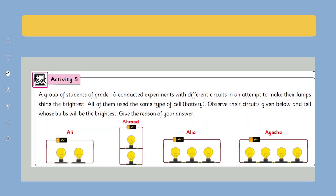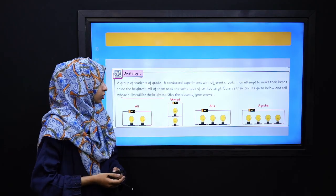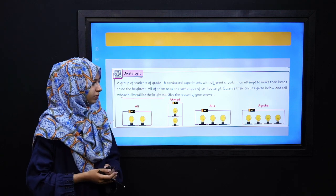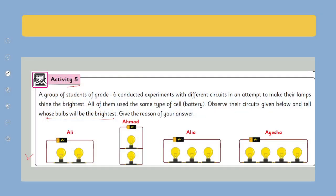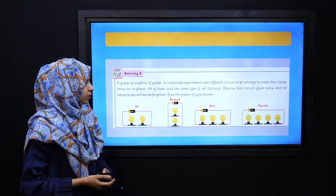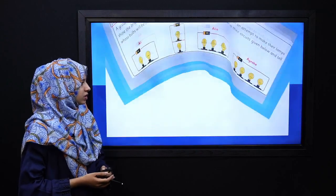We will move on to Activity 5. Here you will see the circuits. All of them use the same type of battery. Observe these circuits given below and tell whose bulb will be the brightest, and also give a reason for your answer. Please pause and solve this activity. Very good. I hope that you will have solved this easily.